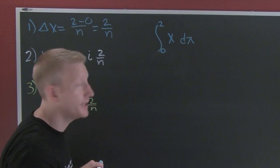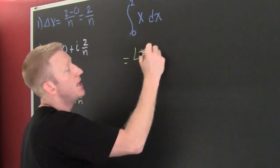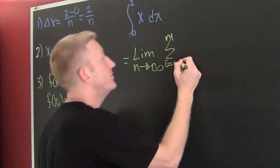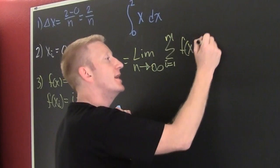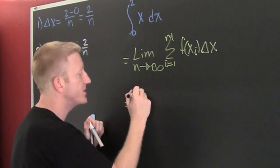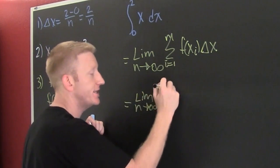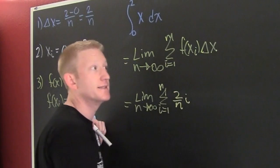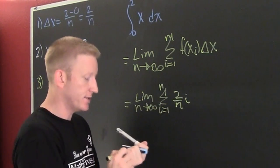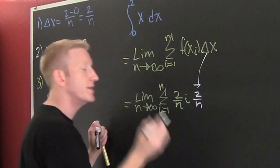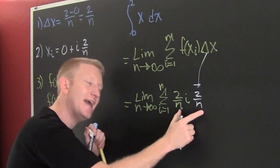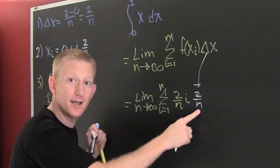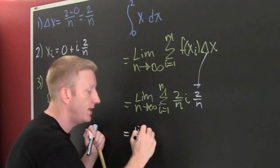Now that we've found all those pieces, we're going to put it into our summation. This is going to be the limit as n goes to infinity of the sum from i equals 1 to n of f of xi times delta x. So this is the limit as n goes to infinity of the sum from i equals 1 to n of 2i/n times 2/n. Multiplying those gives 4 over n squared, and we can use sum properties to pass 4/n² out of the summation since it doesn't depend on i.